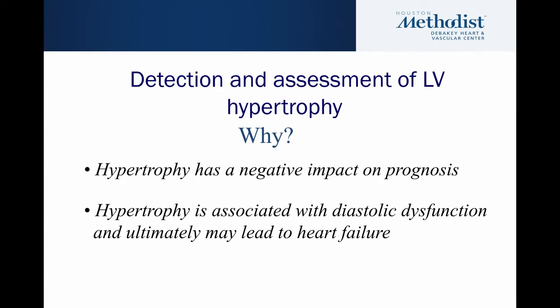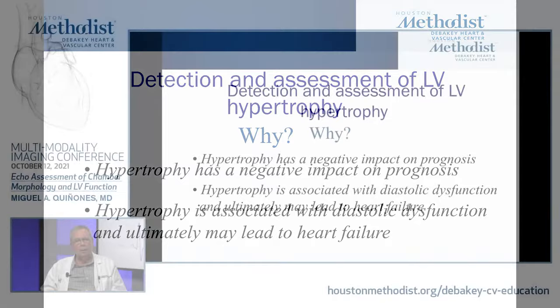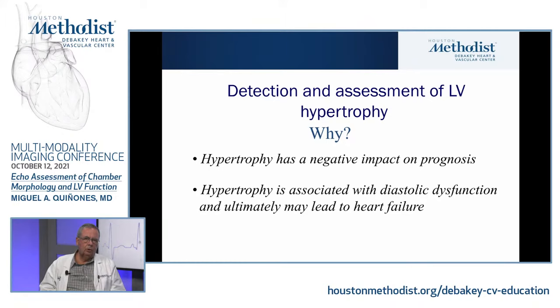Now let's switch to the assessment of left ventricular hypertrophy, which is also a very important part of ventricular morphology and function. We know that hypertrophy has a negative impact on clinical prognosis and outcome, particularly concentric hypertrophy. Eccentric hypertrophy may even be a normal adaptation — for example to exercise, so many athletes will have eccentric hypertrophy. People with chronic aortic regurgitation can go many years with eccentric hypertrophy doing well. In contrast, people with hypertension, hypertrophic cardiomyopathy, or aortic stenosis who have significant concentric hypertrophy tend to have much worse prognosis, more cardiovascular events, and heart failure. So hypertrophy is not always a good thing.